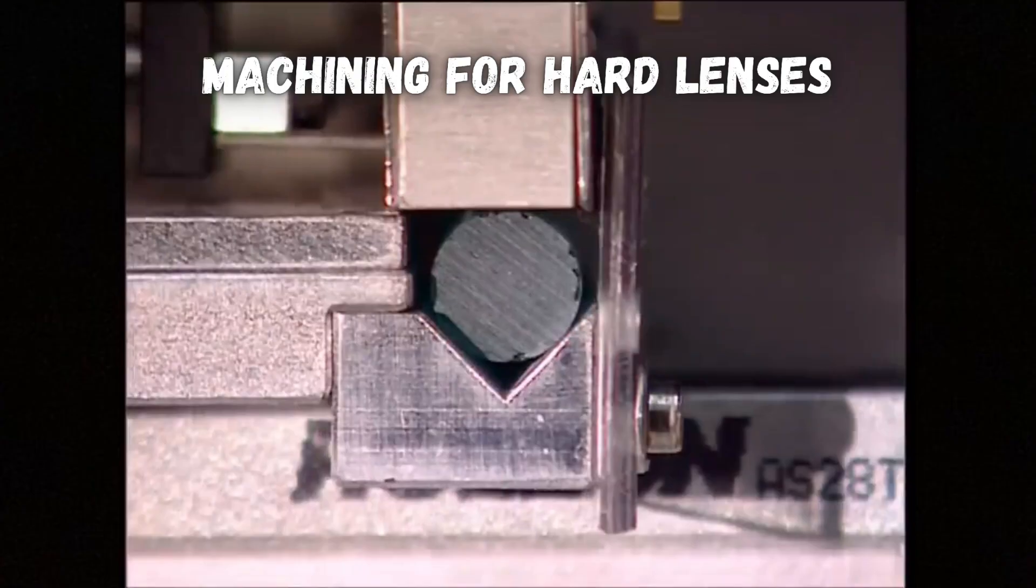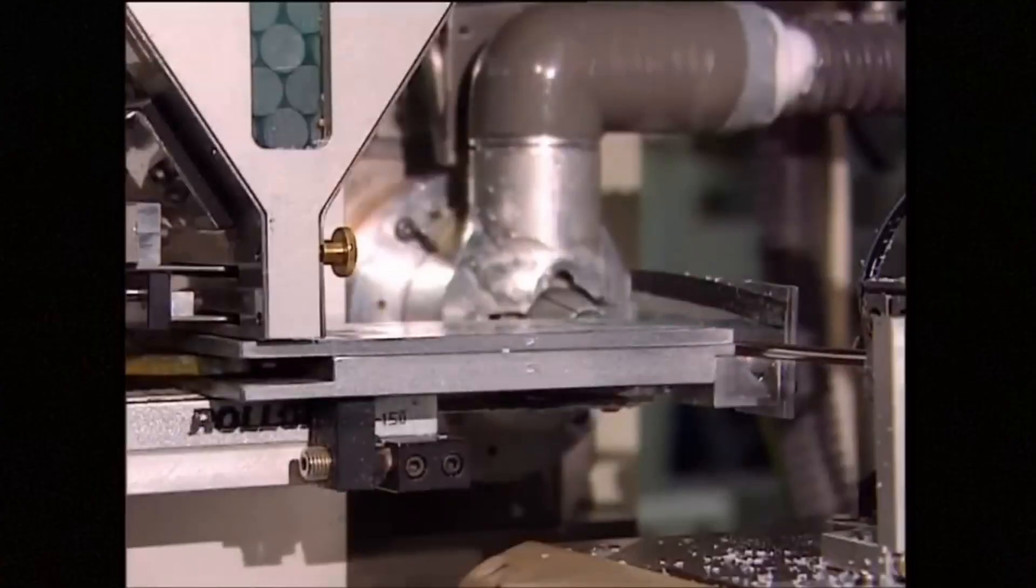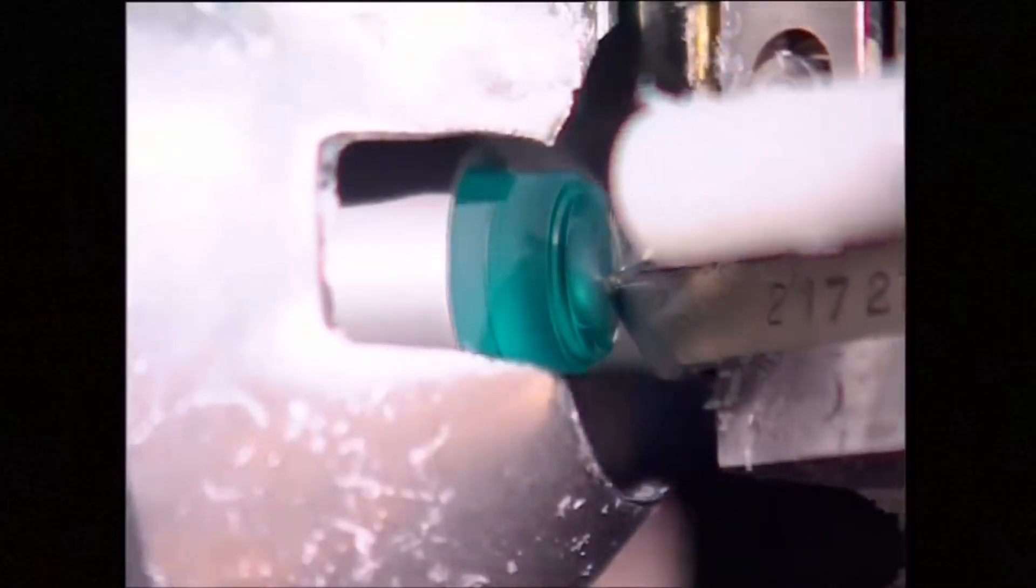What about hard lenses? Instead of molding, the rigid contact material for hard lenses is mounted onto a spinning lathe and precisely shaped using diamond tipped tools.